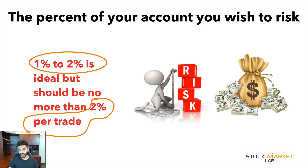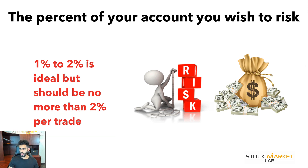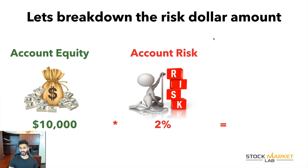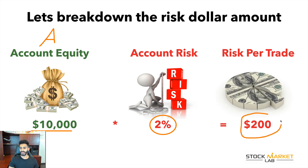A lot of people get the two percent rule confused. They think it means if you buy a stock at ten dollars, your stop loss should be two percent below your entry point — no, that's wrong, ignore that. The two percent rule is different. Let's break down the risk dollar amount. In situation A, your account equity is ten thousand dollars. You want to risk only two percent of your account equity per trade, so you multiply ten thousand by two percent and you get two hundred dollars — that is your risk per trade.